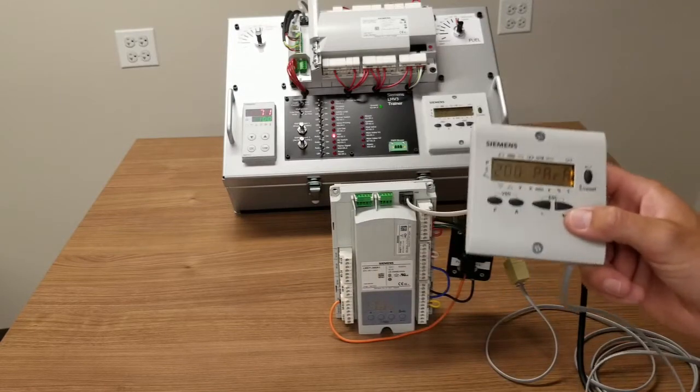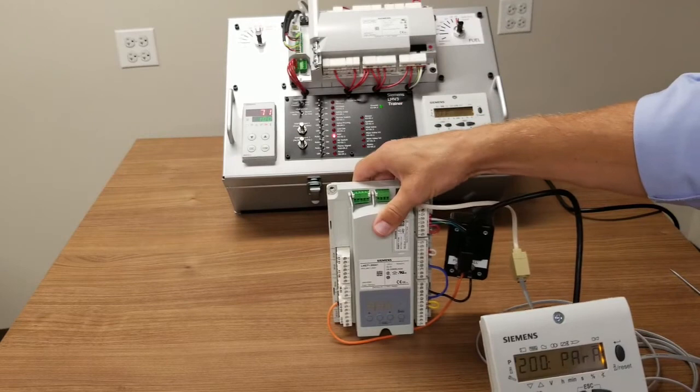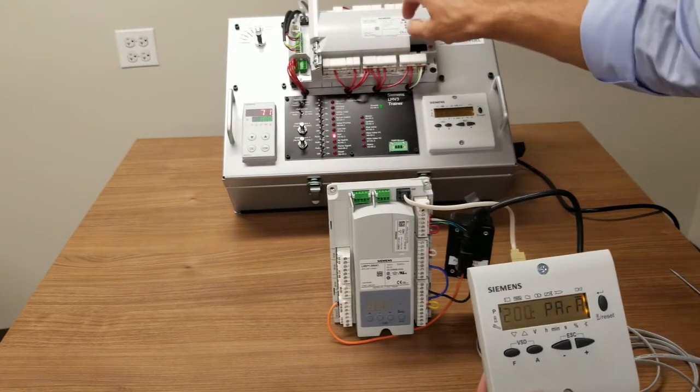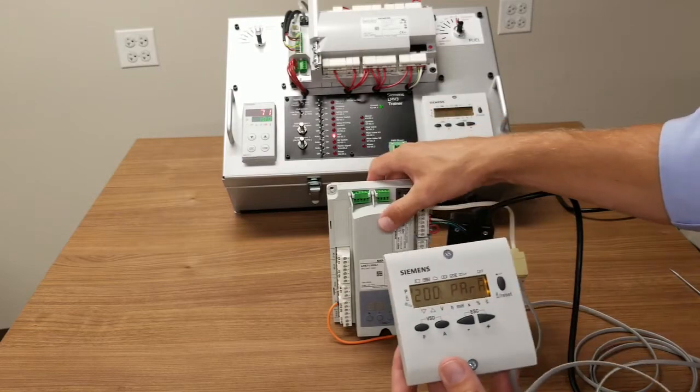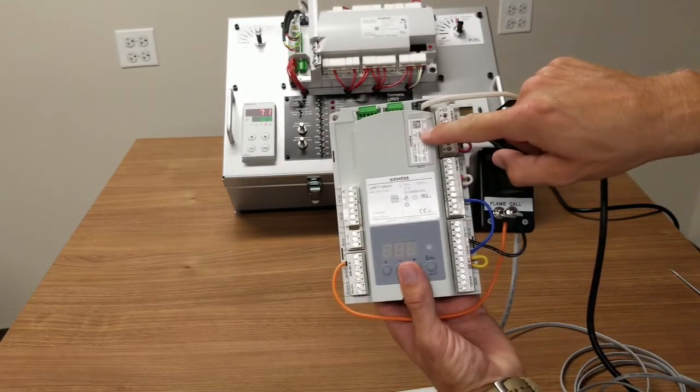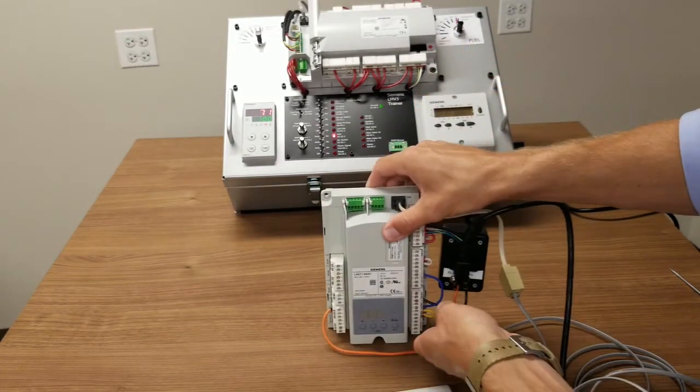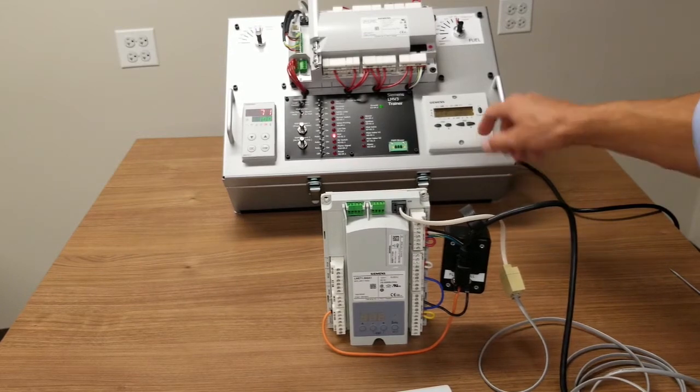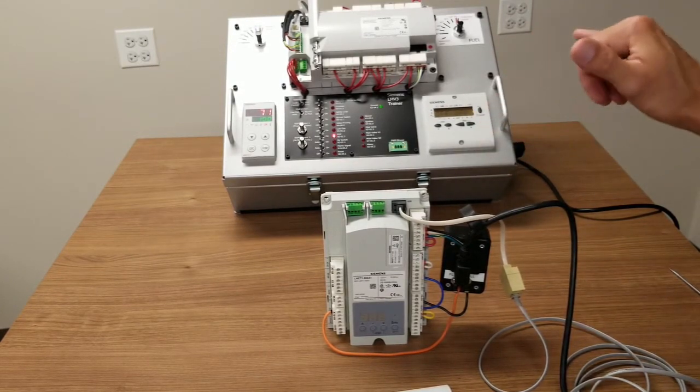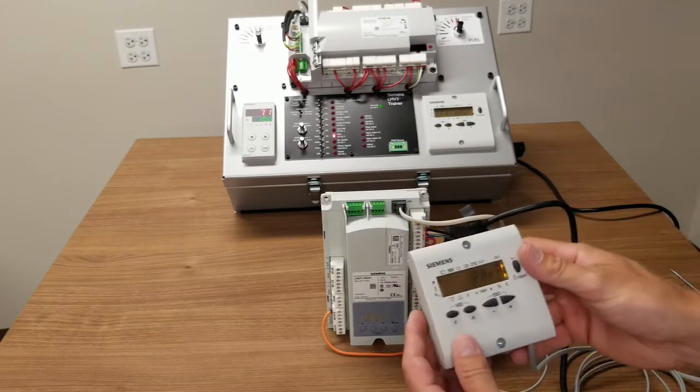Now, the changes you've made have taken place in the control themselves, in the LME, or in the case of the LMV3, in the LMV3. It's wise to back them up. And in the case of the LME, you'll back them up to this program module so that if something happens down the road, your settings will be saved. In the case of the LMV3, you'll back them up to the AZL itself. In both situations, it's a real benefit should something happen to the control down the road.